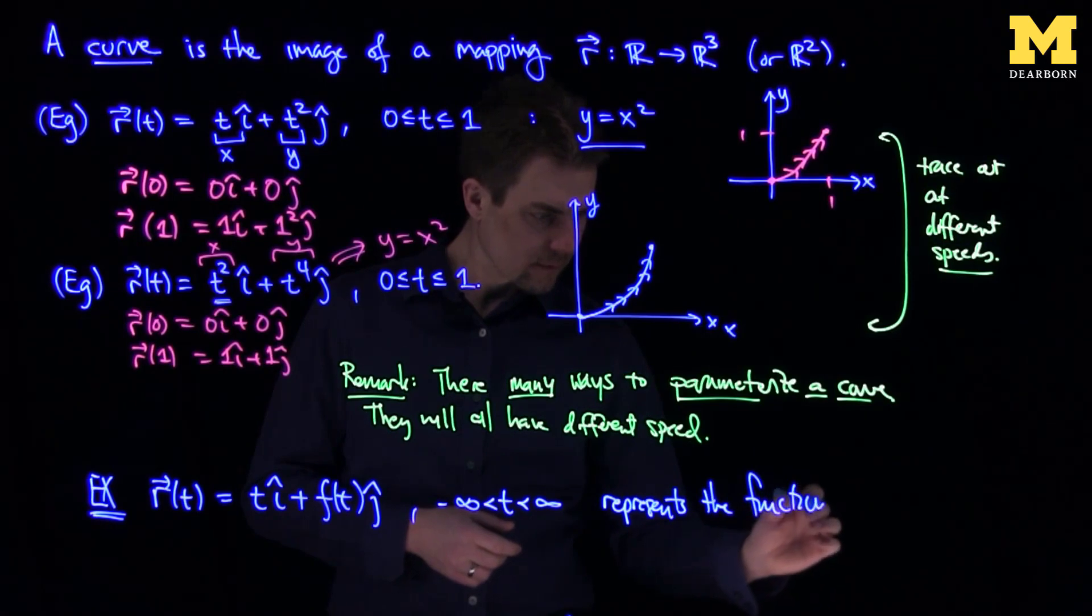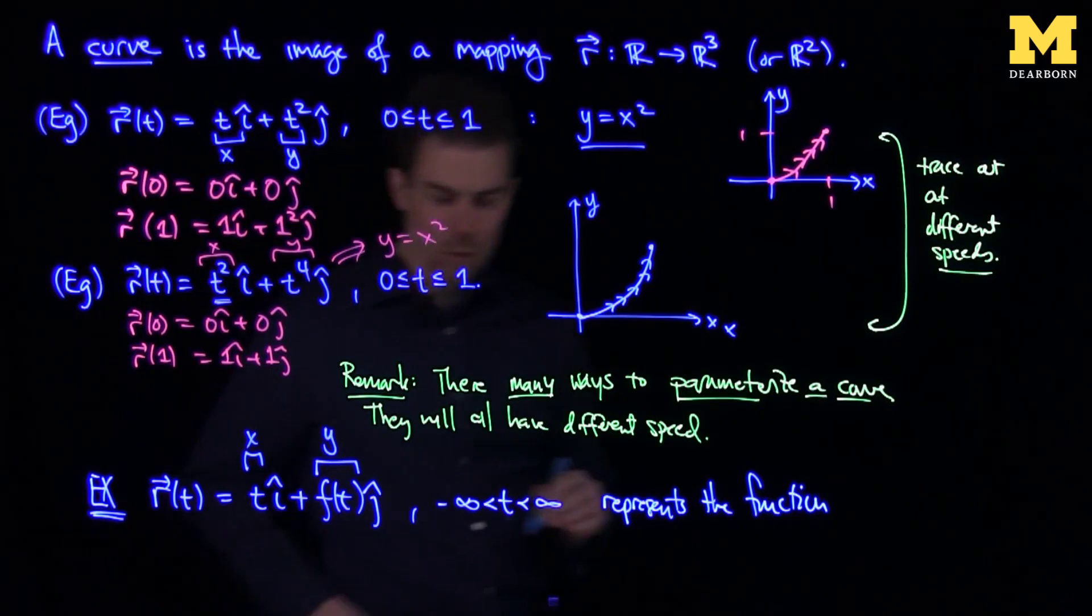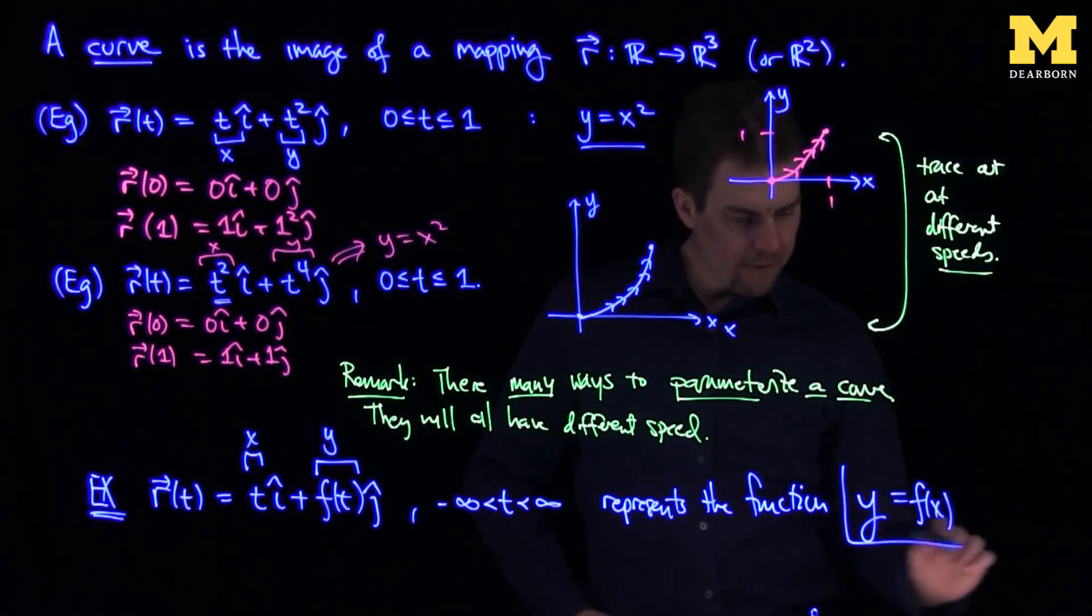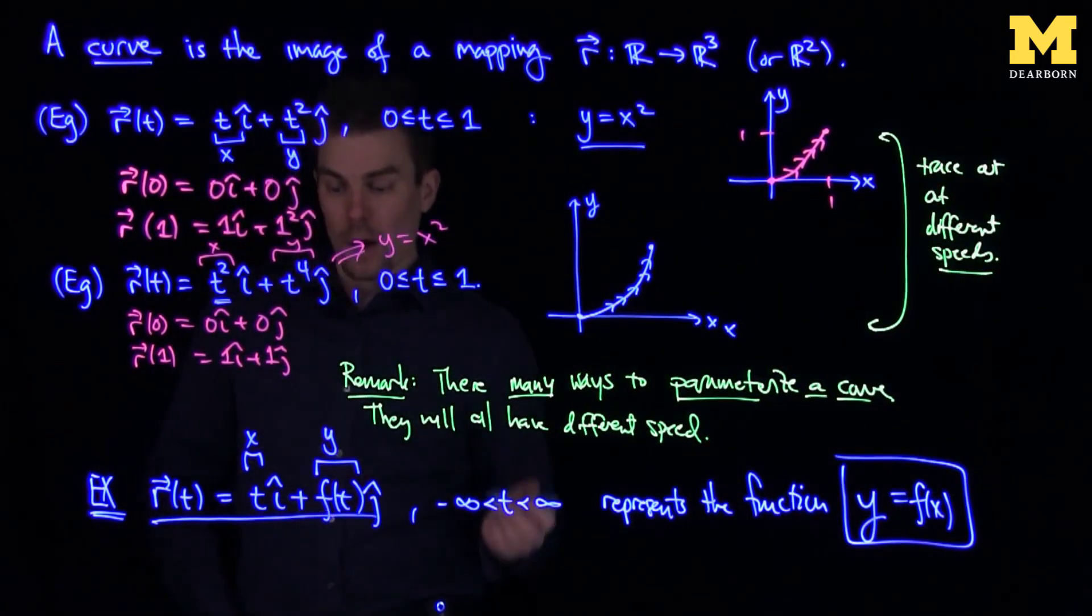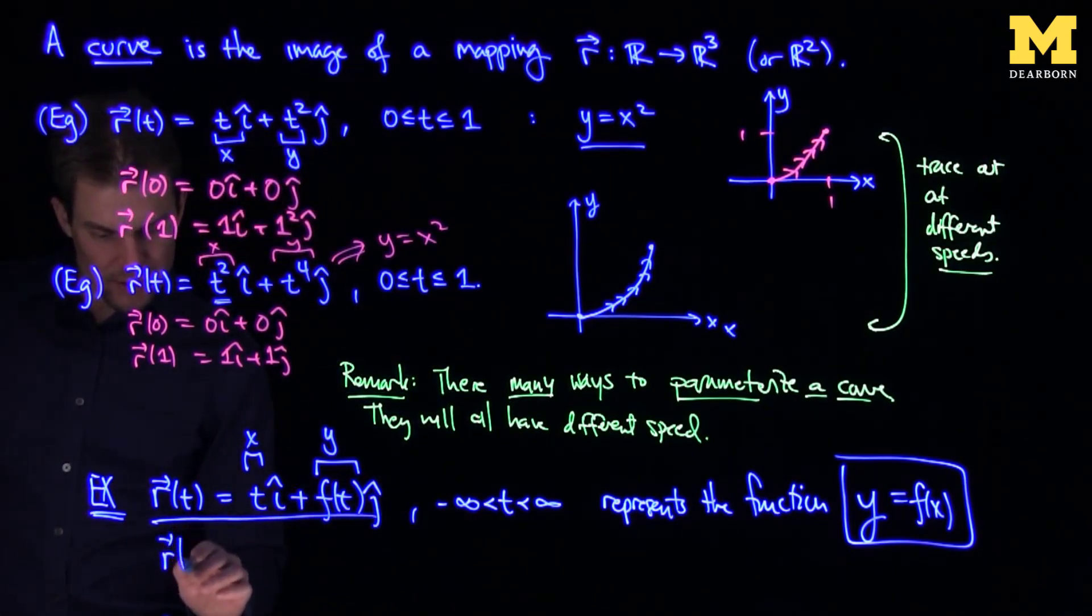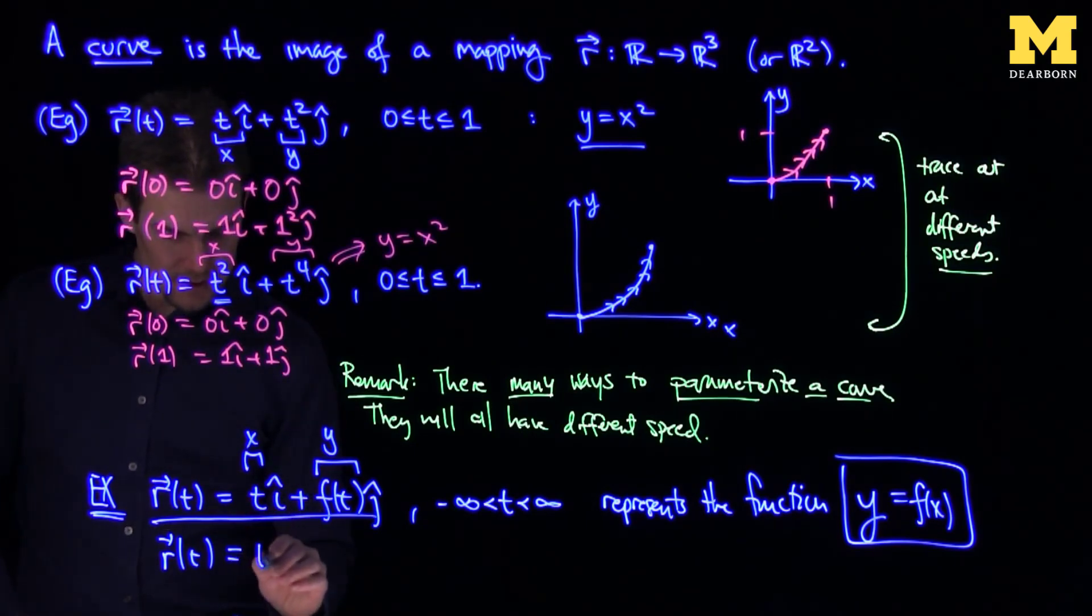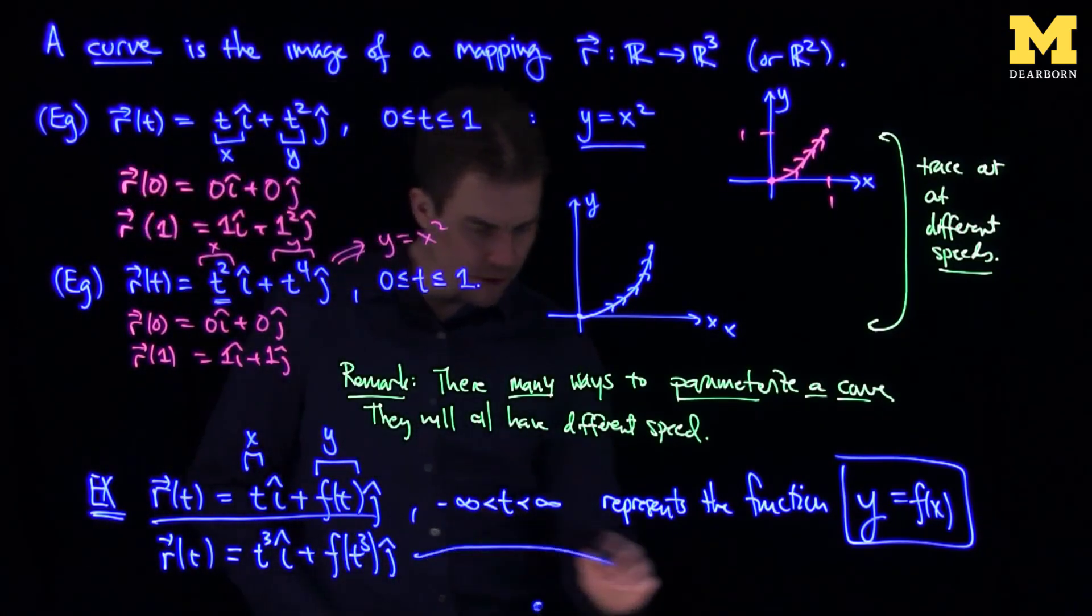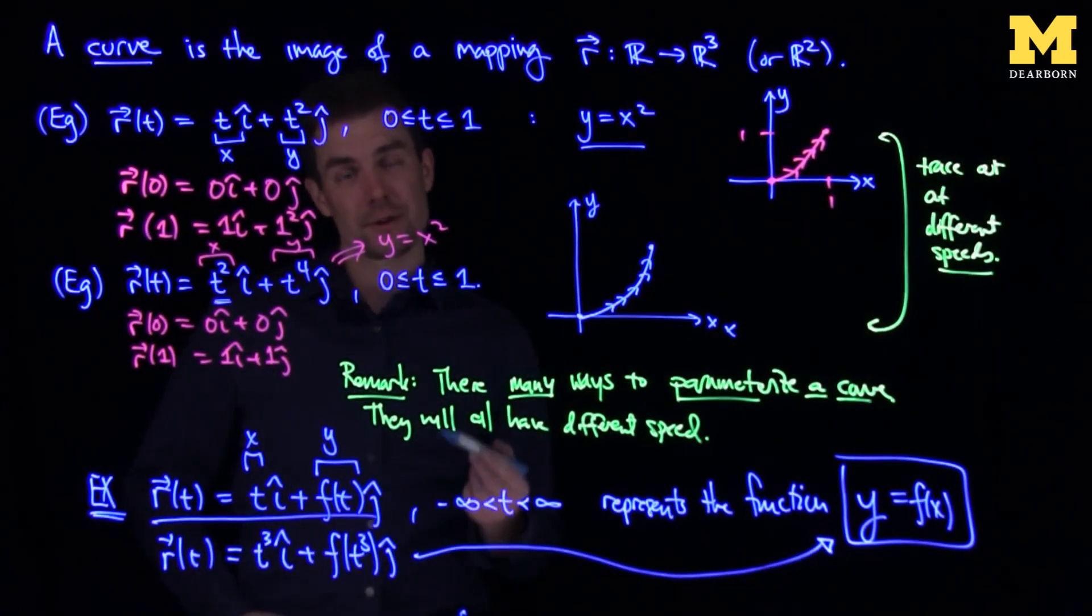So if this is my y over here, and this is my x, then I know that y is equal to f of x. So the graph of every function can be represented by a curve. I can also do many other parameterizations of this. For example, I could say r of t is t cubed i-hat plus f of t cubed j-hat. This curve also represents the same exact function. It traces out the function at a different speed.